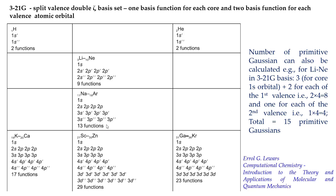It is very important to be able to calculate basis functions for any Pople-type split valence basis set. As the number of basis functions increases, computational time increases. As we go lower in the periodic table, atomic number increases, number of orbitals increases, and computational time increases significantly.